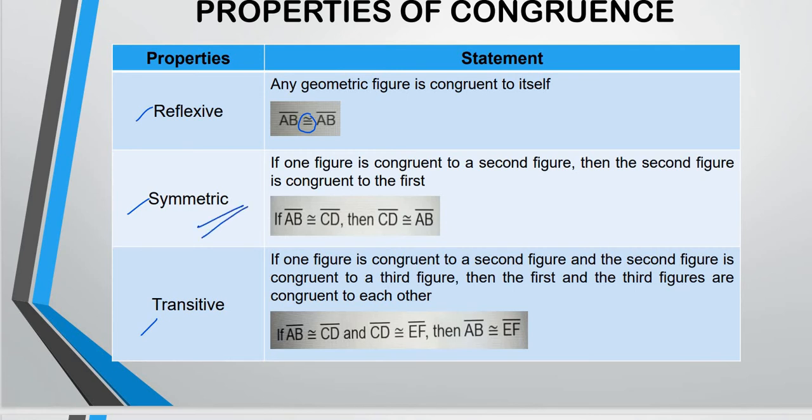Transitive is another story. It involves three. Three item. Because this one is just two. AB, CD, CD, AB. If one figure is congruent to a second figure. AB to CD. And the second figure is congruent to the third figure. The second one. CD equal to EF. Then the first and the third. The first and the third here. Are congruent to each other. That is transitive. So AB implies EF.